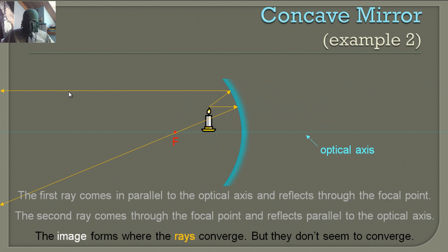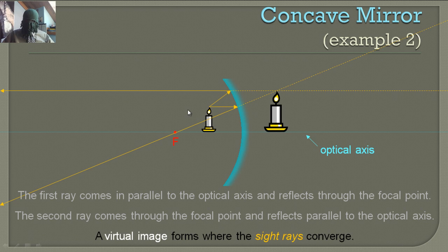The image forms where these rays converge — but they don't converge on this side. They converge on the other side. If we extend the sight lines through the mirror, they're going to converge on the other side of the mirror — that's the top of the candle again. You can see it's bigger.